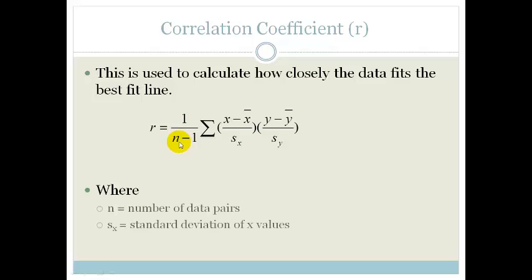Where n is the number of data pairs, s of x is the standard deviation of the x values and s of y is the standard deviation of the y values. Like I said don't panic I'm going to show you how to do this in a calculator but you need to see what this actually looks like before we carry on.